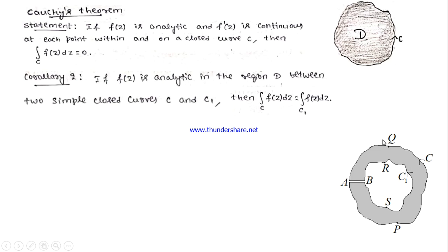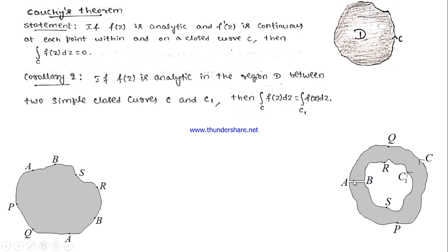I am introducing P and Q as two points on C, and R and S as two points introduced on C1. Now consider the path A, P, Q, A, B, R, S, B, A — this represents the entire closed region. If I find the integration of f(z) over this closed curve, it is equal to zero because f(z) is analytic in this region as well as on its boundary. By Cauchy's theorem, the value of this integral has to be zero.